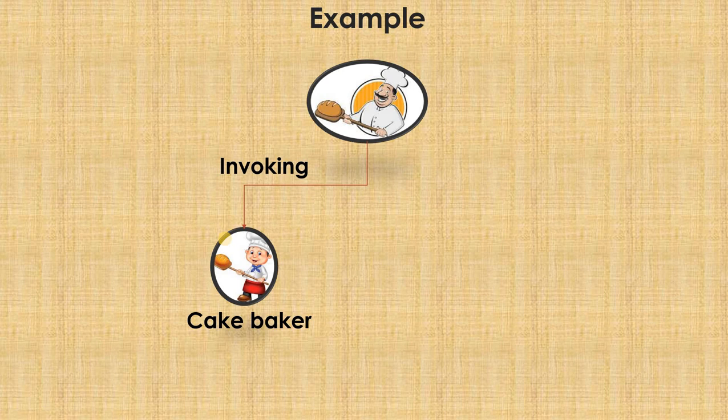In that case, I will be taking the help of another baker who helps me only to bake cakes. Whenever I get an order of cake, I will take the help of him. Otherwise, I will continue with my job. This process of whenever I call, I take the help of another person, I call this as invoking.